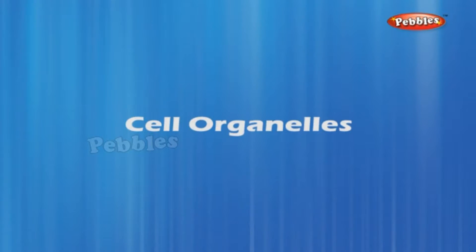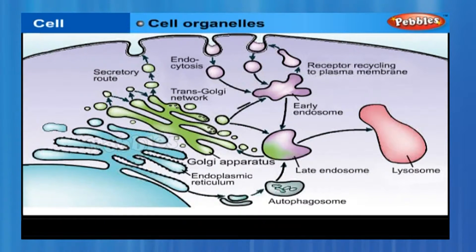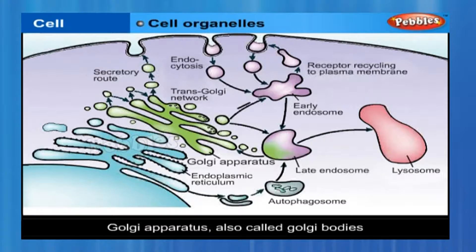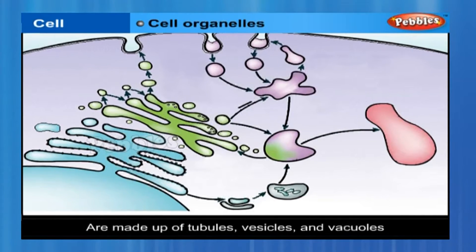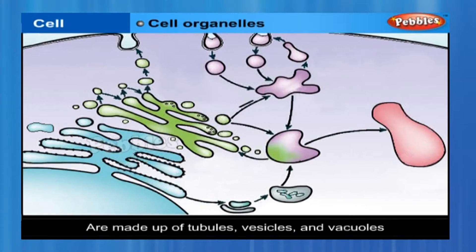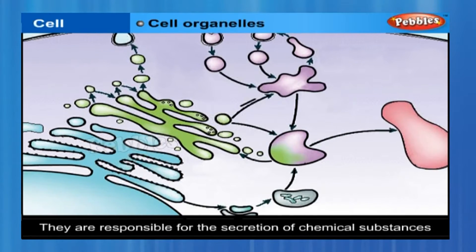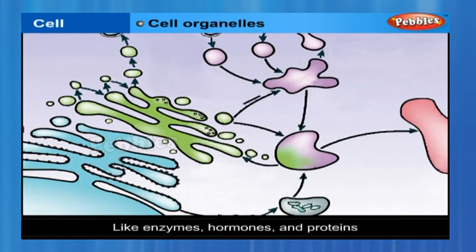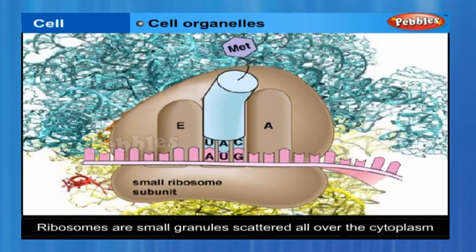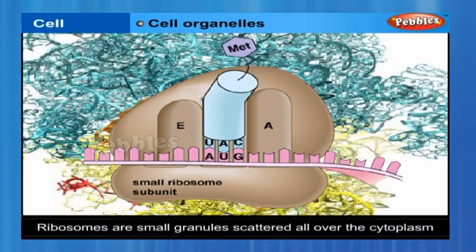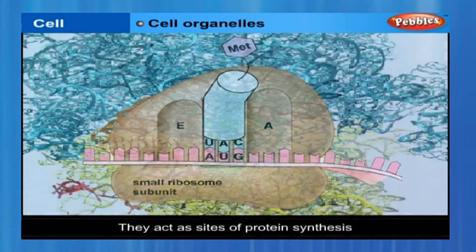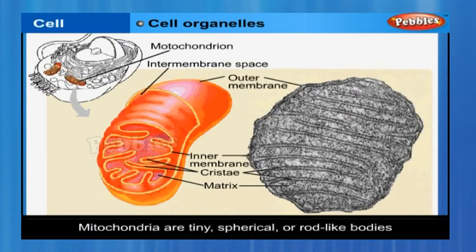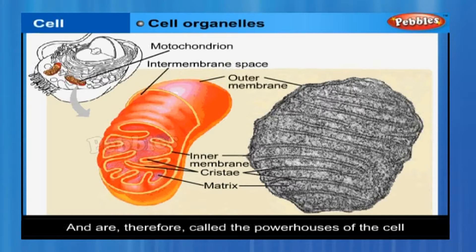The figure shows a labelled diagram of a generalised cell. Golgi apparatus, also called Golgi bodies, are made up of tubules, vesicles and vacuoles. They are responsible for the secretion of chemical substances like enzymes, hormones and proteins. Ribosomes are small granules scattered all over the cytoplasm and act as sites of protein synthesis. Mitochondria are tiny, spherical or rod-like bodies that act as sites of energy production and are therefore called the powerhouses of the cell.